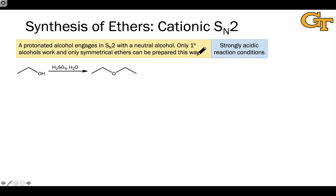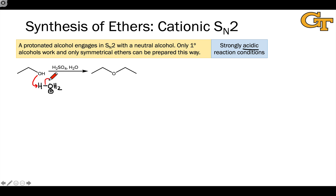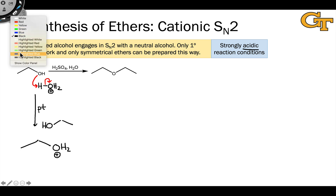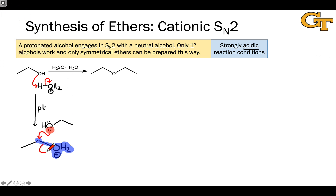We can also synthesize ethers from alcohols using strongly acidic reaction conditions — using a cationic SN2 process. The combination of the strong acid, which generates H3O+ essentially quantitatively, and the alcohol leads to the formation of a protonated alcohol through a proton transfer elementary step. We now have an intermediate analogous to the alkyl bromide in the Williamson synthesis: a primary electrophilic carbon linked to a good leaving group, the OH2+ group. When the nucleophilic lone pair of the neutral alcohol engages with that electrophilic carbon, an SN2 elementary step occurs, generating a protonated ether and water.